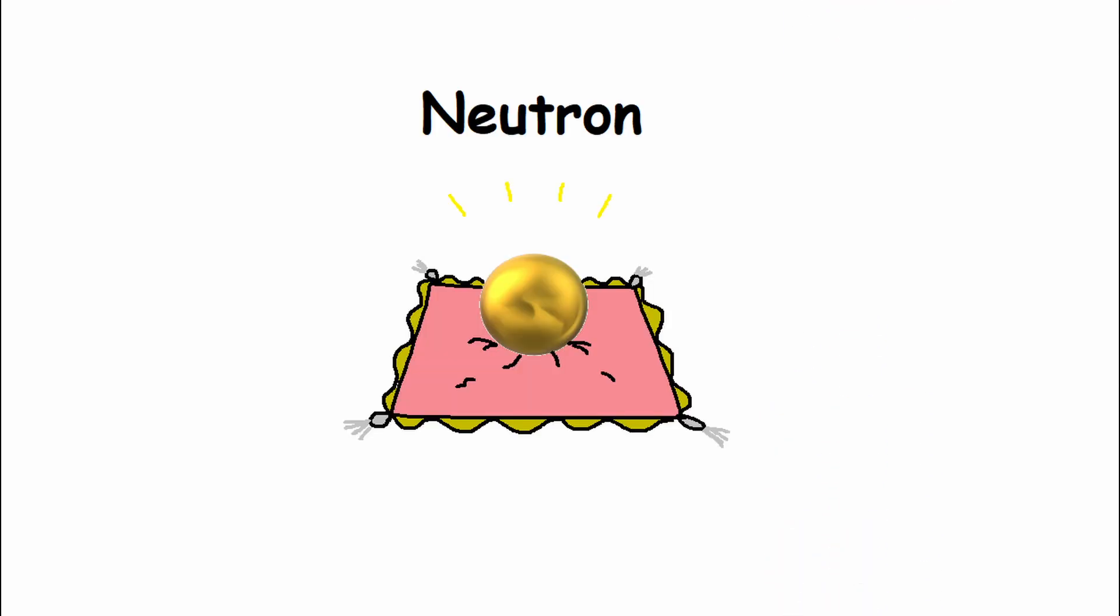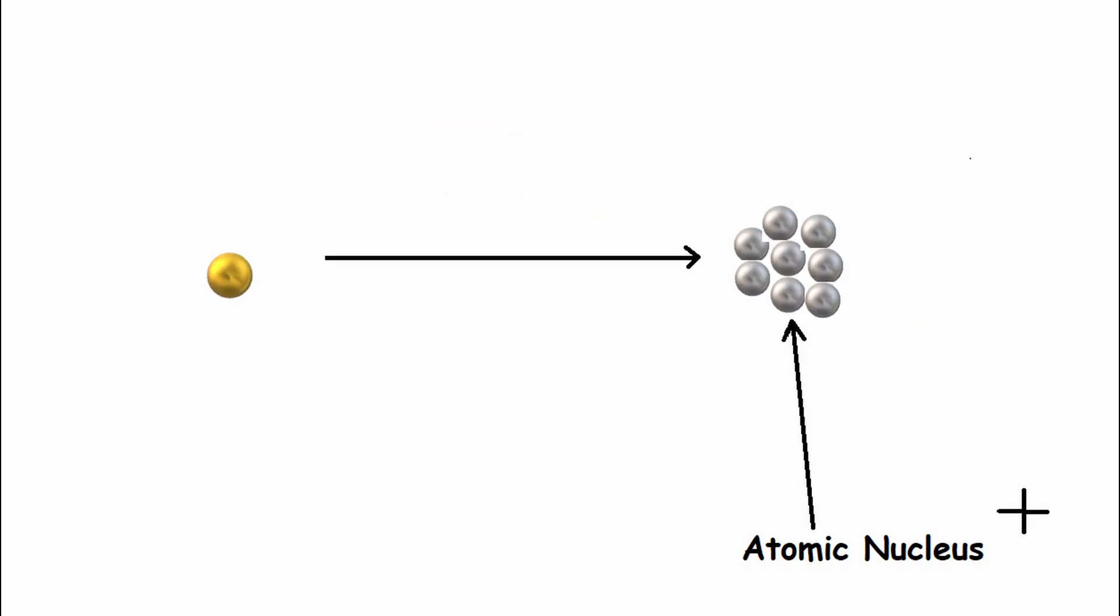But then, just one month after successfully splitting the lithium nucleus, everything changed. The neutron was discovered. This is a subatomic particle with no electric charge, and has roughly the same mass as a proton, meaning it could be accelerated into positively charged atomic nuclei without being repelled.